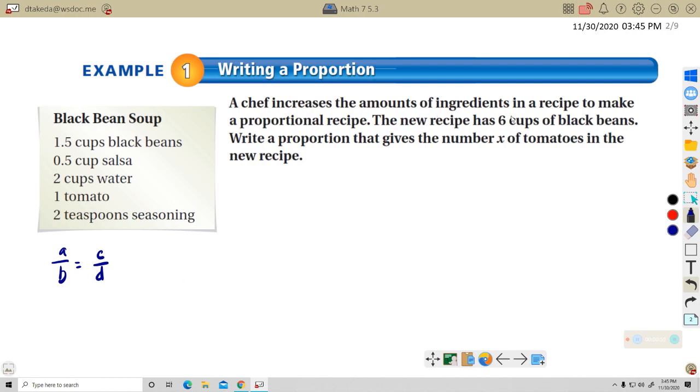A chef increases the amount of ingredients in a recipe to make a proportional recipe, right? It's going to be, everything's going to be proportion. So it's going to be like more, but it's going to taste the same. The new recipe has six cups of black beans, right? A proportion that gives the number X of tomatoes in the new recipe. Okay, so I'm going to say black beans. And that works upside down too. It's up to you how you want to do it.